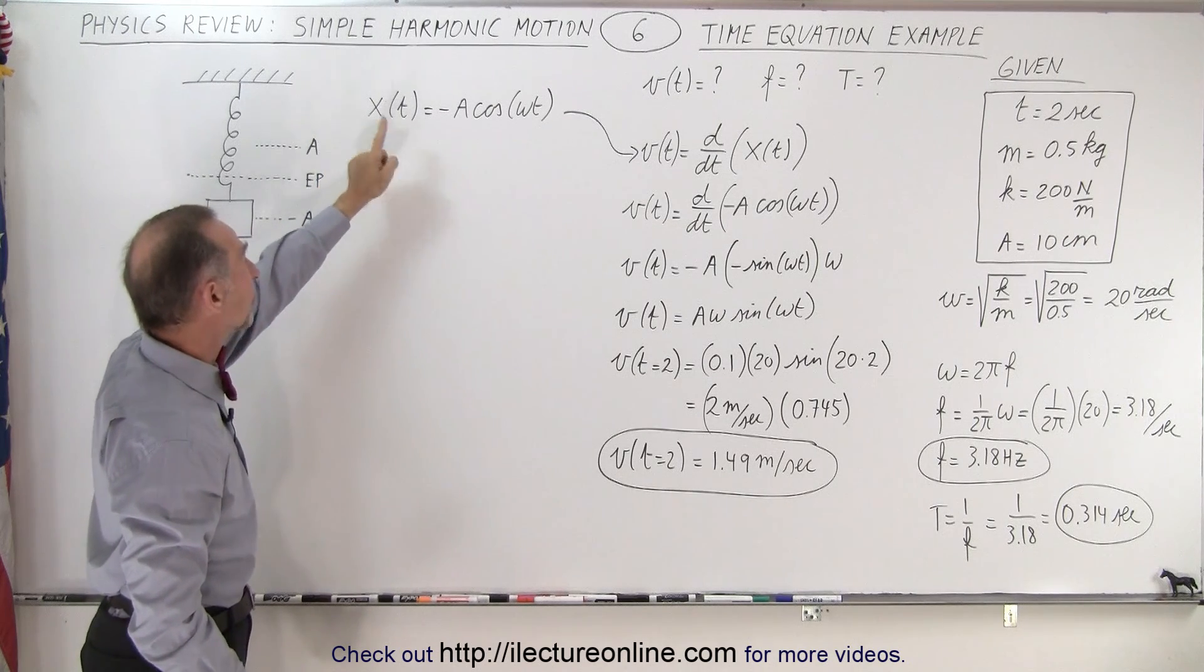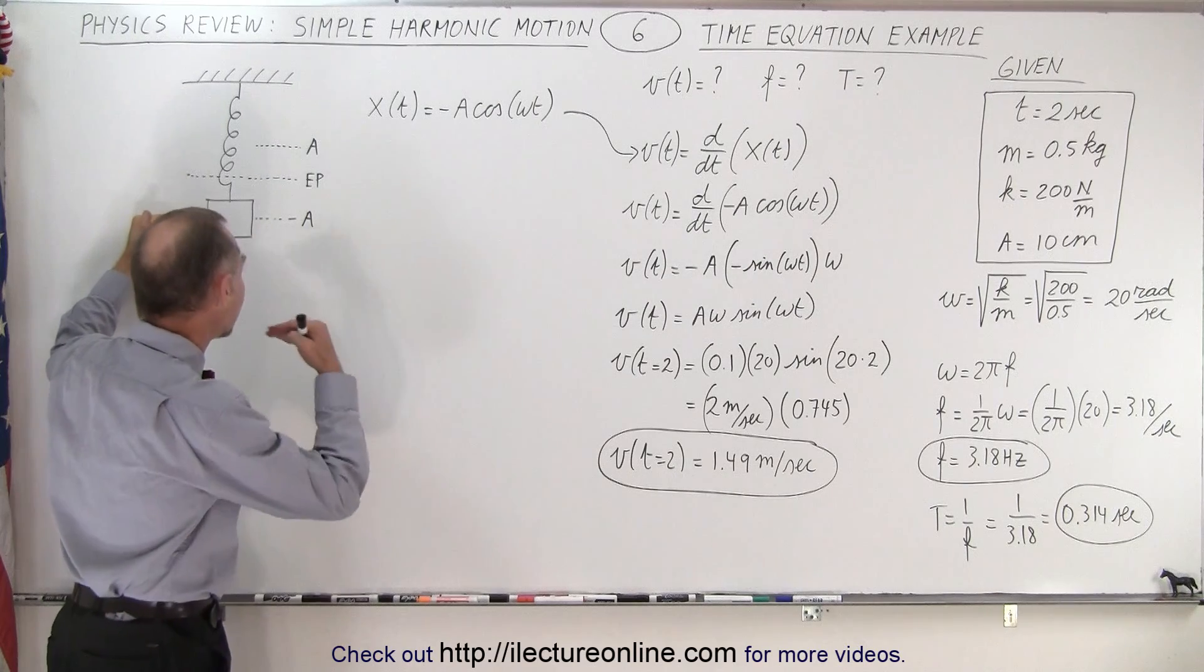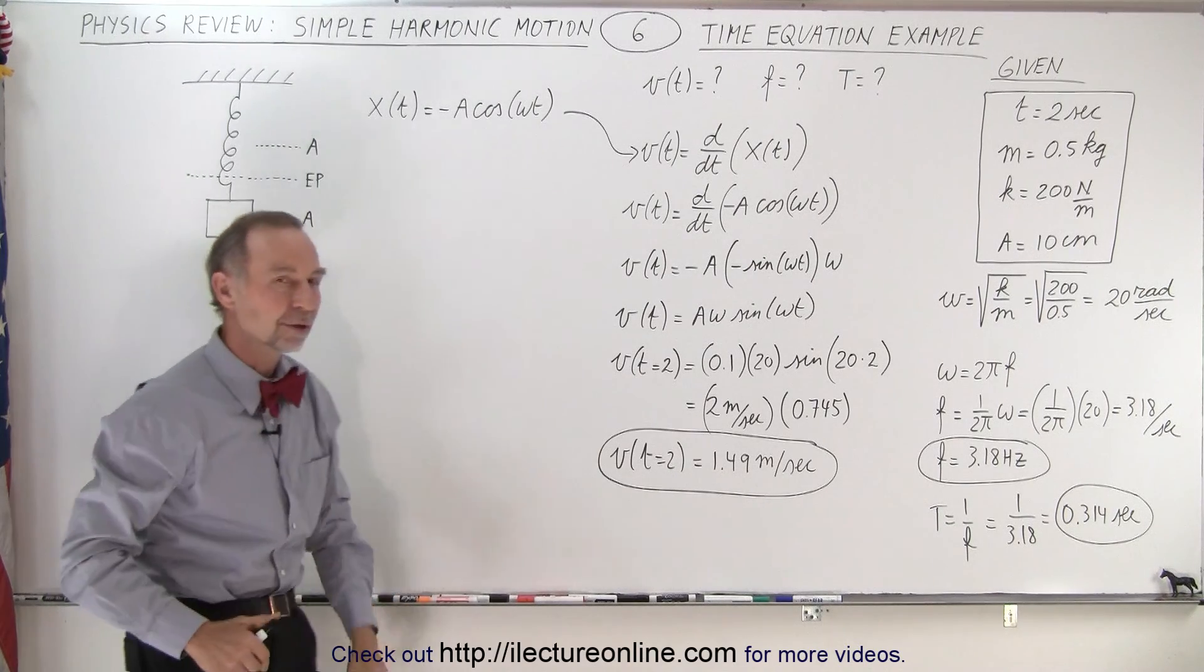So the equation we need to use is this equation right here. The position as a function of time is equal to negative A cosine omega t, because it's on the negative side, maximum value for x at time equals zero.